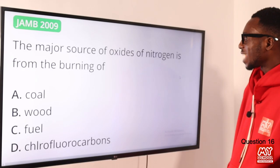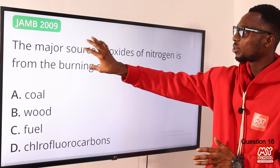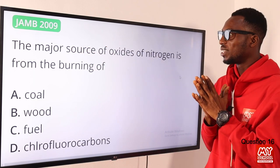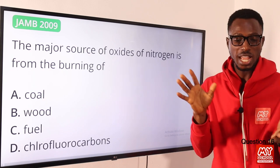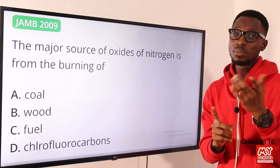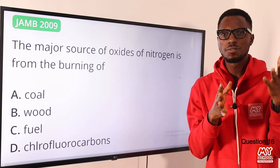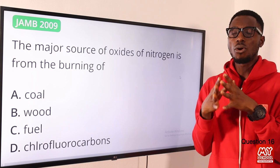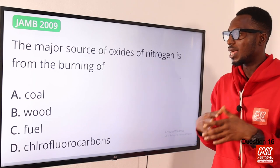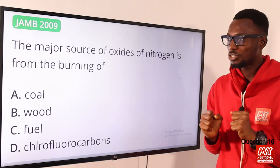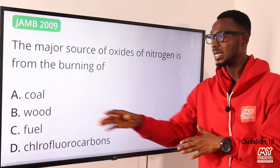Question 16: the major source of oxides of nitrogen is from the burning of fuel. The exhaust from transportation vehicles — trucks, cars, buses — is the major source. Oxides of nitrogen like NO and NO₂ are produced when combustion of fuel occurs at very high temperatures. So the correct option is option C.